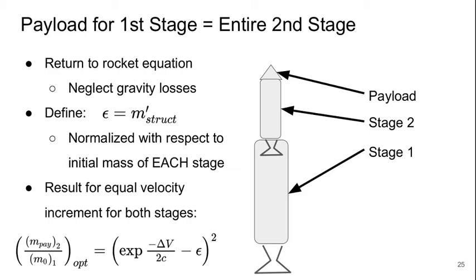So if we go back to our rocket equation and neglect gravity losses, we can define this parameter epsilon, which is the M structure, but it's normalized with respect to the initial mass for each stage.